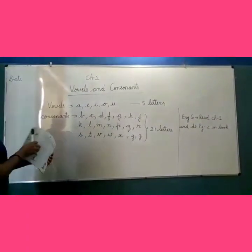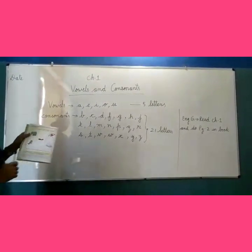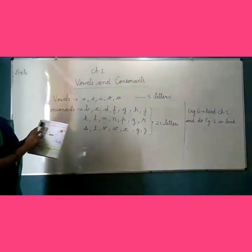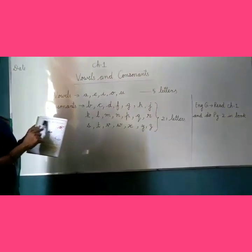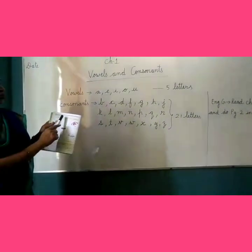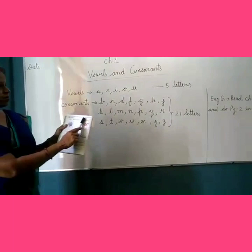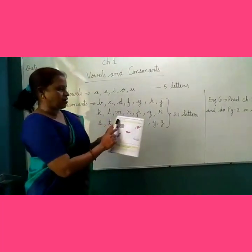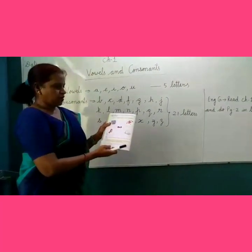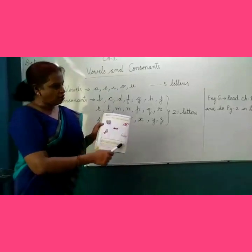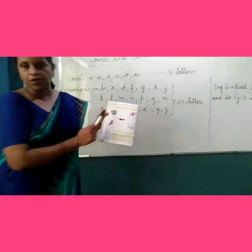Now, turn your page. Page number 2. Look at these pictures in your book. Choose a word from the box and write it under its picture. What is the first picture?